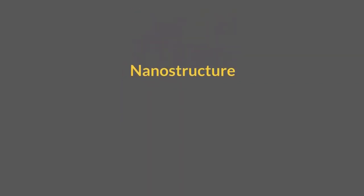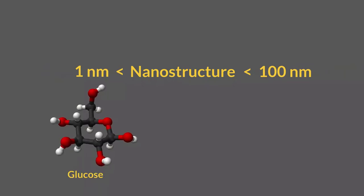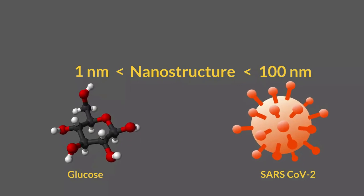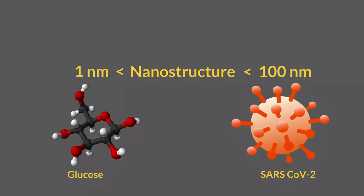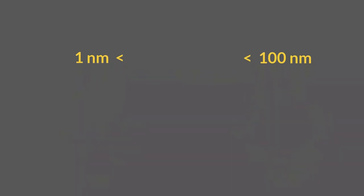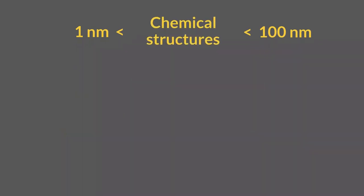In terms of size, nanostructures are defined as having one dimension between one nanometer and one hundred nanometers. To put this into perspective, a glucose molecule is roughly one nanometer across, and a coronavirus is roughly one hundred nanometers in diameter, so nanostructures are between this range. However, chemical structures are in that size range also.